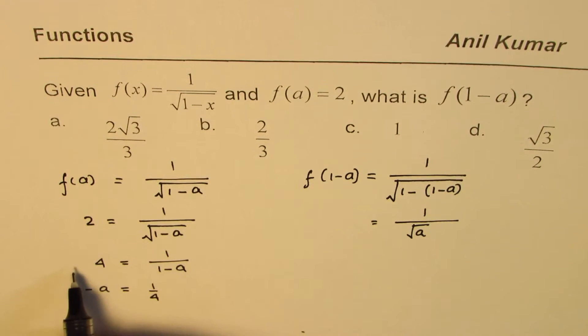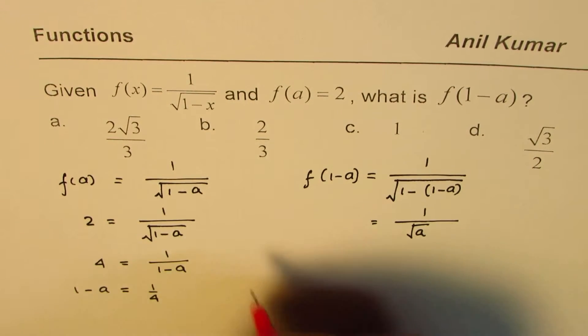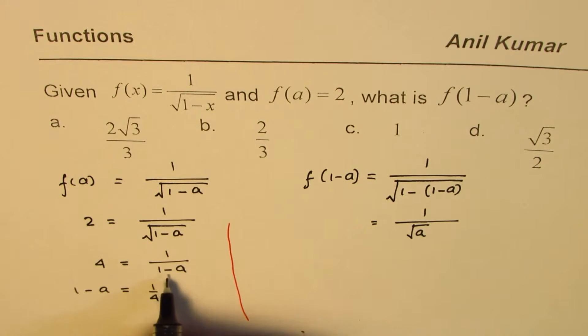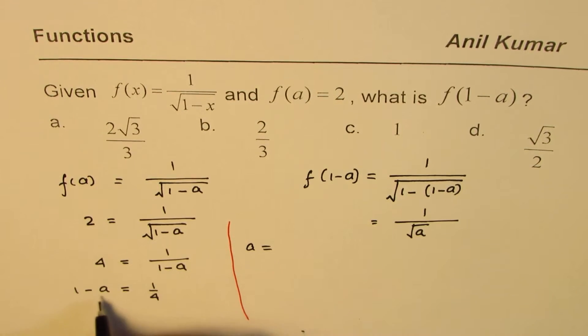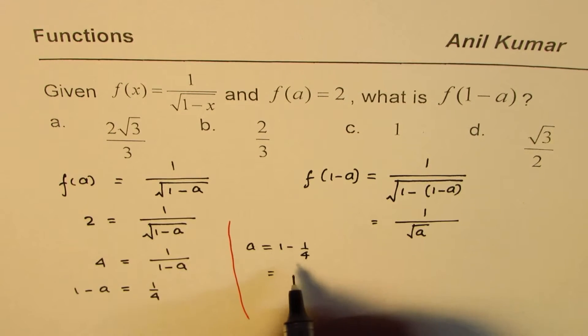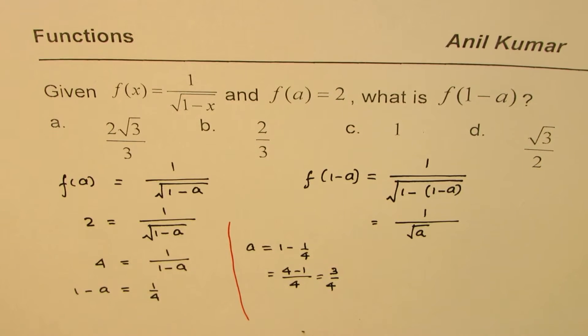So, I could also just multiply and get the same result. From here, we get a equals to 1 minus 1 over 4, which is 4 minus 1 over 4, or 3 over 4. So, that is the value of a.